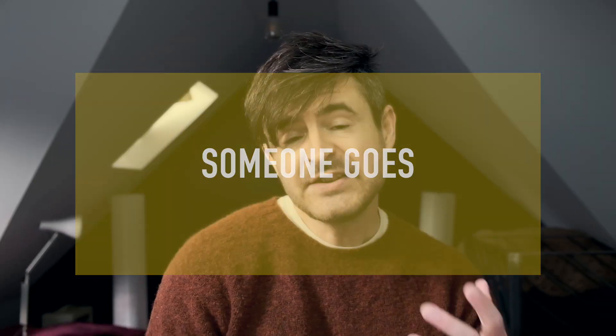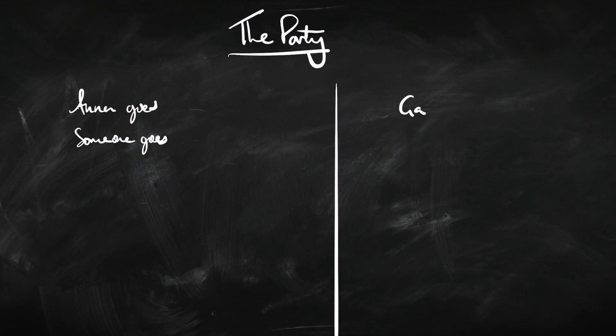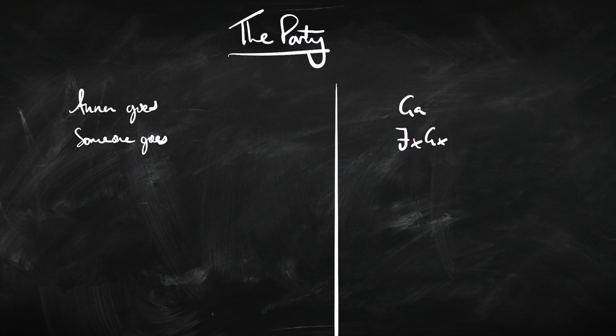Someone goes. This is one of the key insights of first-order logic: the word 'someone' doesn't work the same syntactically as the word 'Anna.' Anna goes has the form G-A. Someone goes doesn't have that form — it has this form: there is an X and X goes to the party. So 'someone goes' means there is this person or thing X such that X goes to the party.